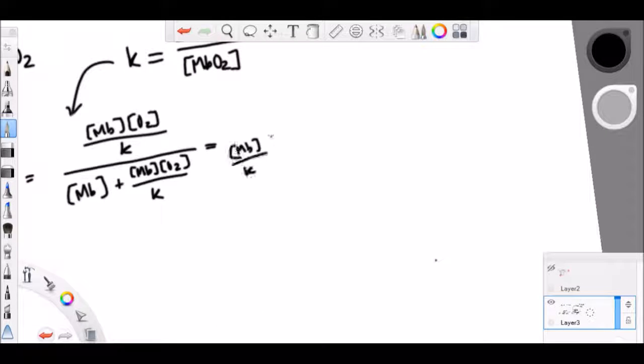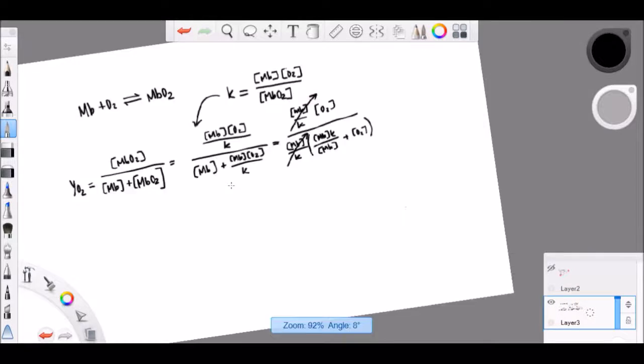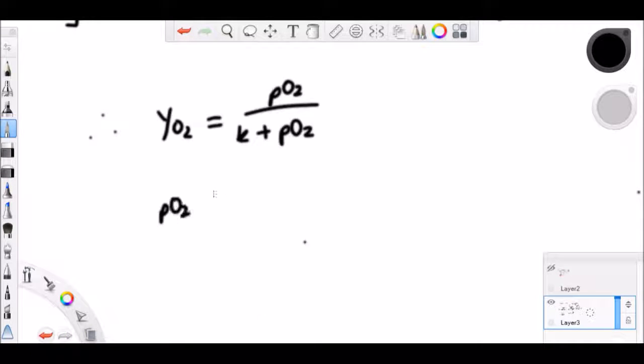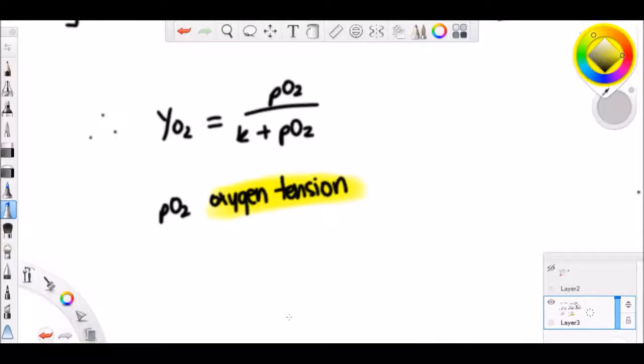Once you've derived it all the way, you actually replace the concentrations of O2 with the pressures of O2, since oxygen is a gas. And the PO2 is often known as the oxygen tension. So if you were to see it in a question, it might say that as the verbiage.